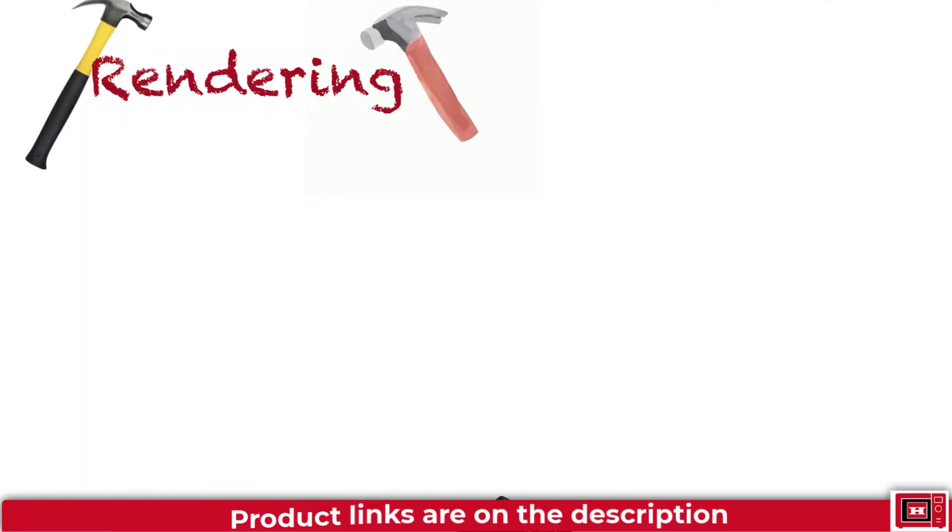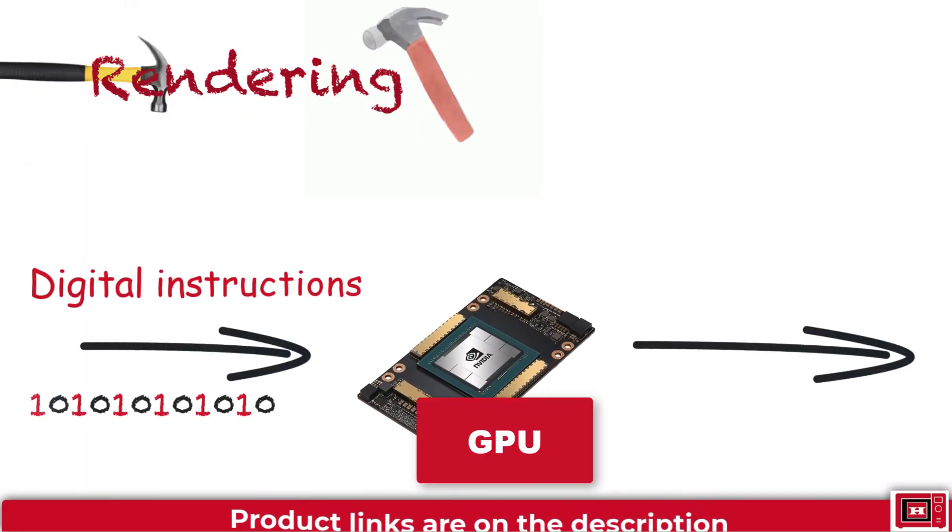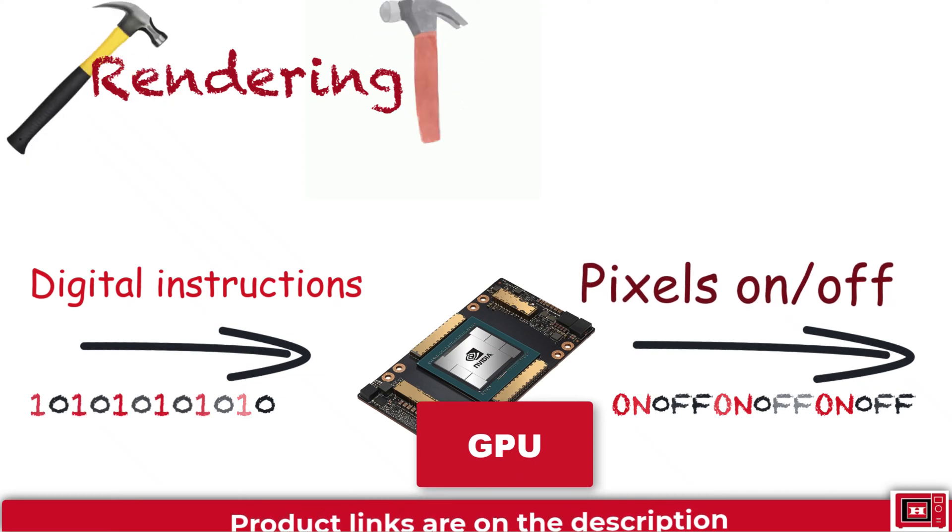Rendering is simply taking a digital instruction and translating it to a bunch of on and off commands for pixels on your display to obey.